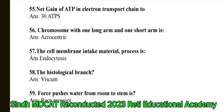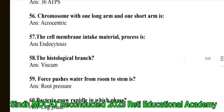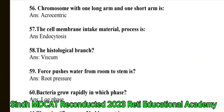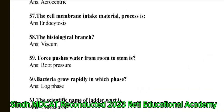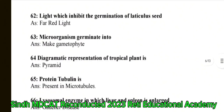Question 58: The histological branch is viscum. Question 59: Force that pushes water from root to stem is root pressure. Question 60: Bacteria grow rapidly in which phase — the correct answer is log phase. Question 61: The scientific name of bladderwort is Utricularia.